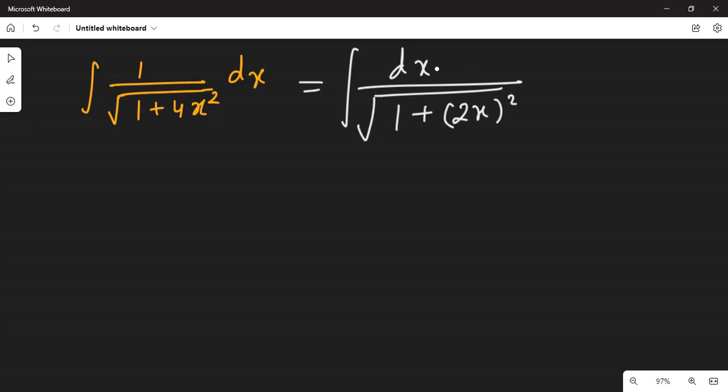Now, if we put 2x equal to t, what do we get? Derivative of 2x. So we can write 2dx equals dt. Value of dx in the numerator is the same as dt over 2.